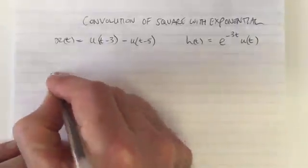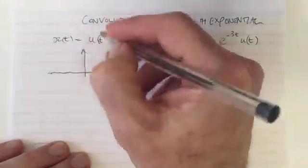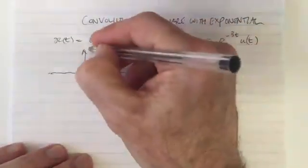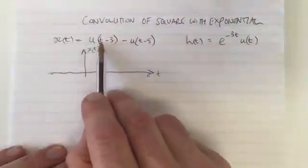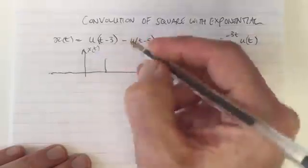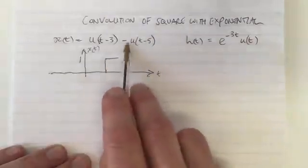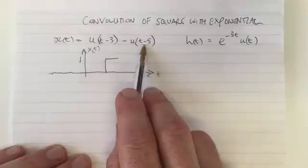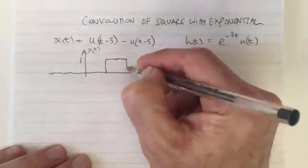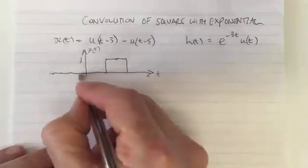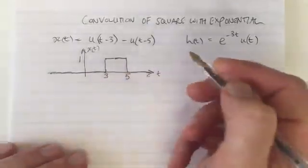I like to plot them out to remind myself what I'm dealing with. So this is x(t): we have a step function that starts when the thing in the brackets equals zero, meaning t equals 3. At t equals 3 the step function starts with a height of 1, then we subtract a step function which starts at t equals 5, so it goes back to 0. This function equals 0 everywhere except between 3 and 5, where it equals 1.